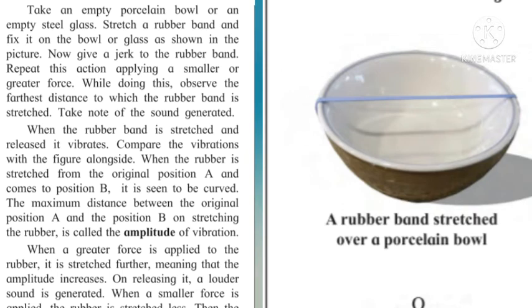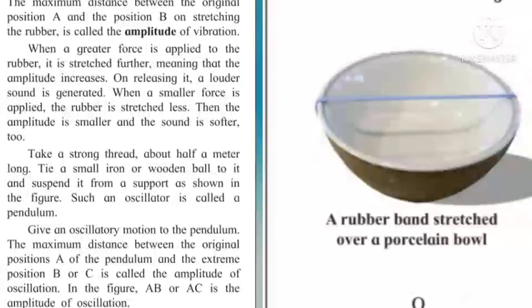The maximum distance between the original position A and the position B on stretching the rubber is called the amplitude of vibration. When a greater force is applied to the rubber, it is stretched further, meaning that the amplitude increases. On releasing it, a louder sound is generated. When a smaller force is applied, the rubber is stretched less. Then the amplitude is smaller and the sound is softer too.